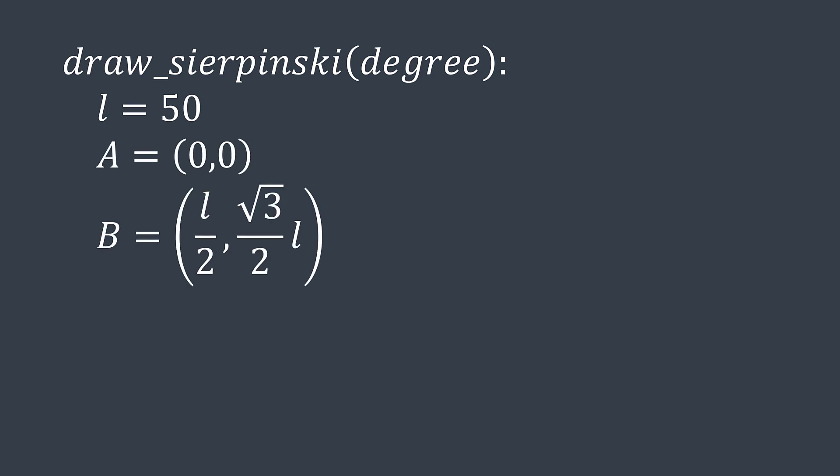A is at 0, 0, B is at L divided by 2, square root of 3 divided by 2 times L, and C is at L 0.